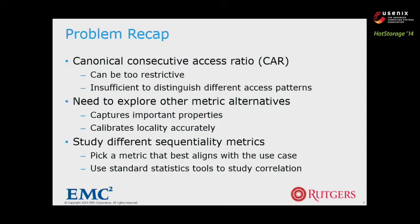To briefly summarize, the canonical consecutive access ratio is too restrictive in practice and is insufficient to distinguish different access patterns. We need to explore other metric alternatives that capture important properties to calibrate locality accurately. If all metrics provide the same view of sequentiality, it doesn't matter which definition to use — otherwise, it is necessary to pick a metric that best aligns with the use case and study the correlation between different metrics.